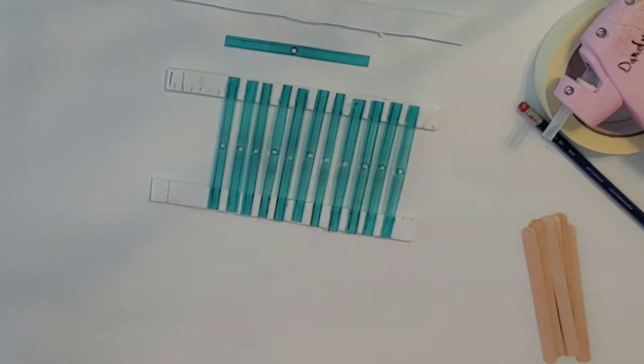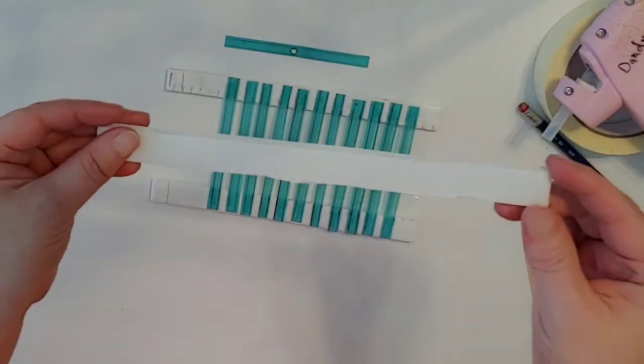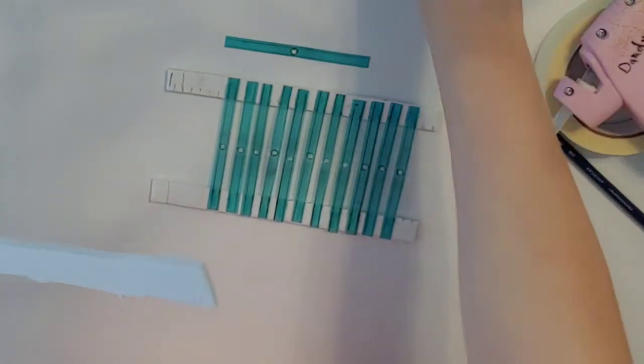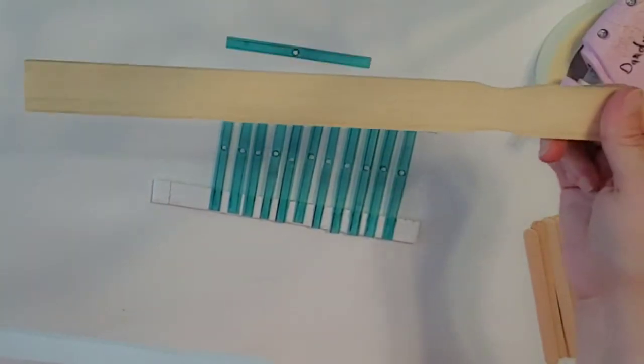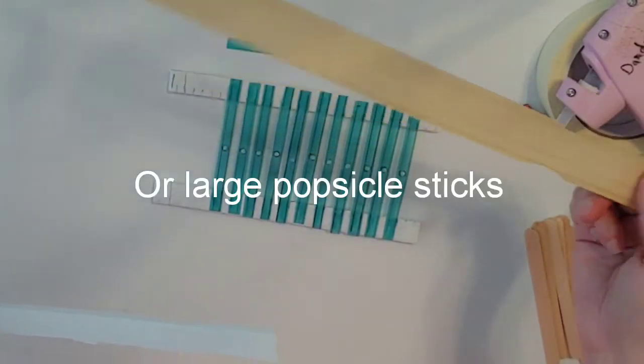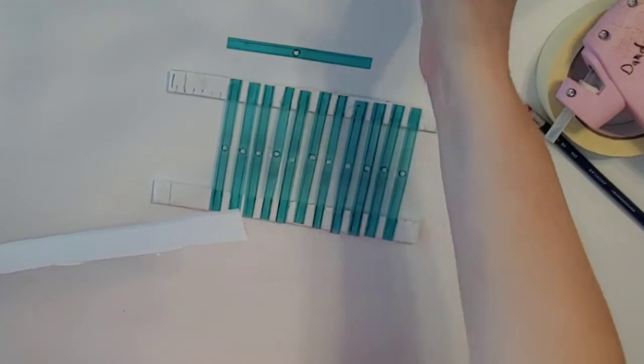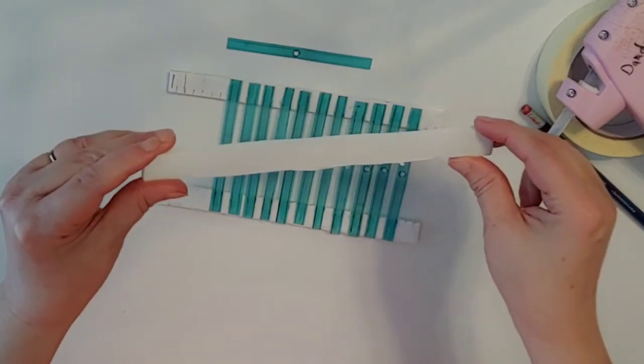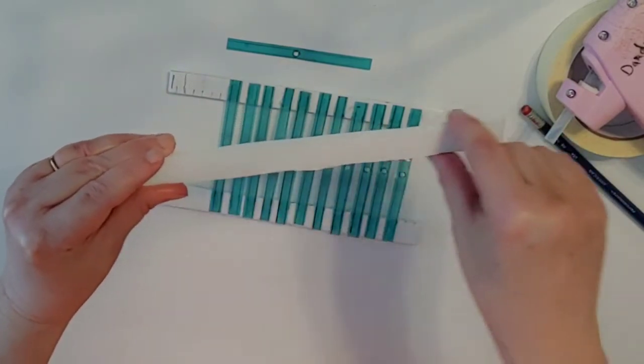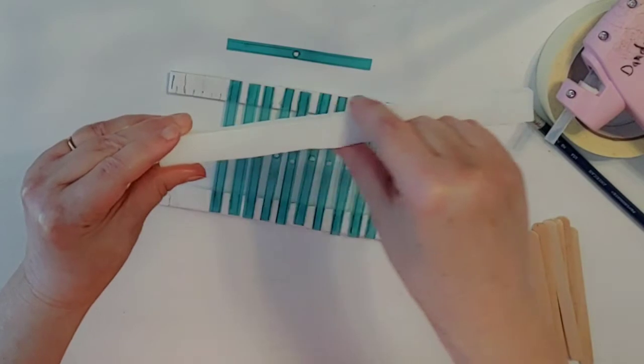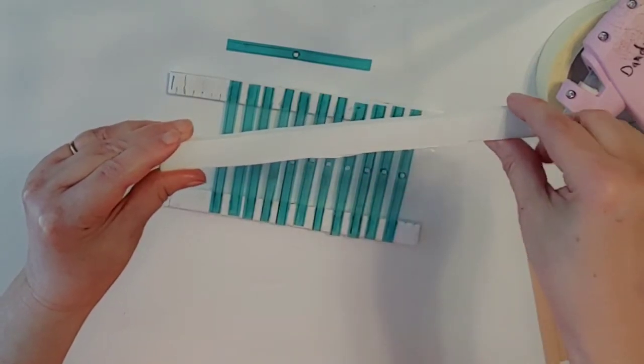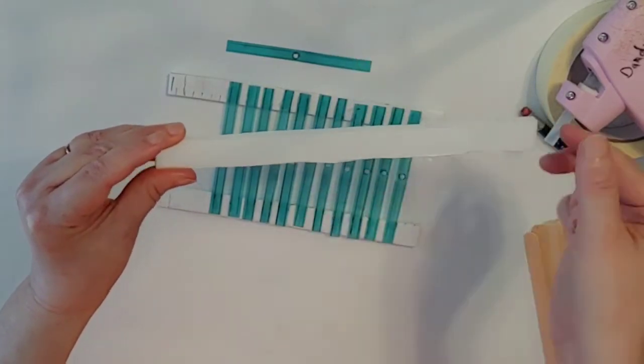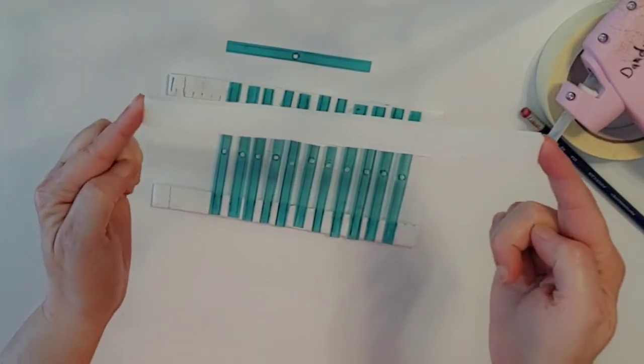First we want to cut the foam board into some strips. Like I mentioned earlier, you could also use a paint stick. So we got foam board. This foam board is one and a half centimeters wide and eight inches long.